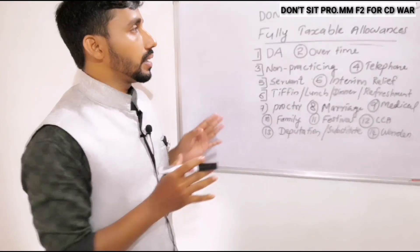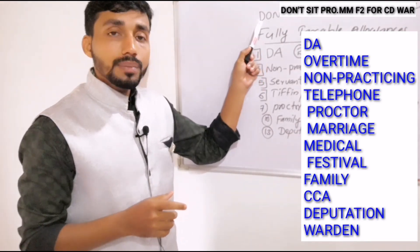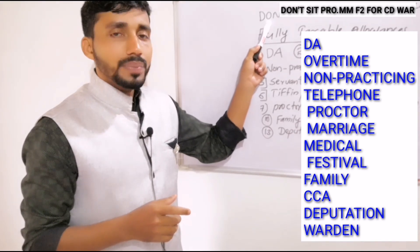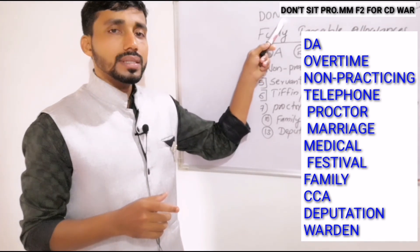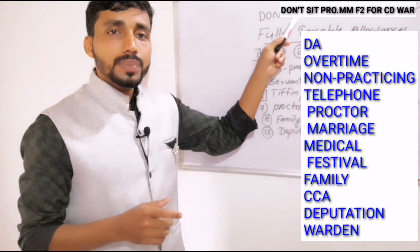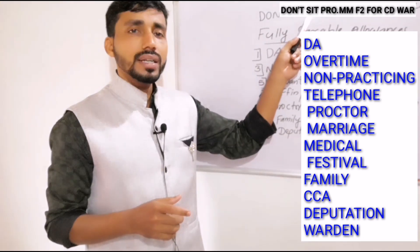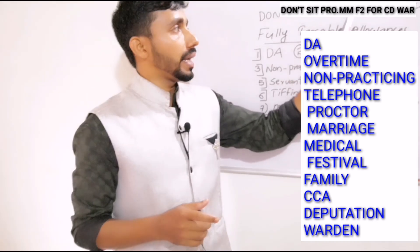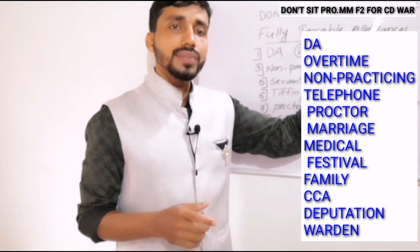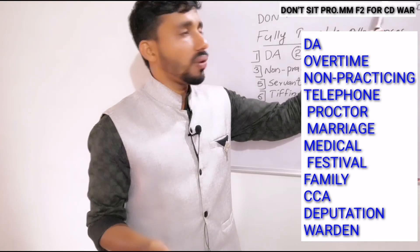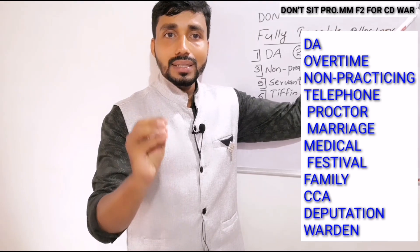To remember all fully taxable allowances, use the mnemonic: DON'T SIT PROFESSOR MMF2 FOR CD-VAR. D = Dearness Allowance, O = Overtime Allowance, N = Non-practicing Allowance, T = Telephone Allowance, S = Servant Allowance, I = Interim Relief Allowance, T = Tiffin Allowance, Pro = Proctor Allowance, M = Marriage Allowance, Medical Allowance, F2 = Festival and Family Allowance, C = CCA (City Compensatory Allowance), D = Deputation, VAR = remaining allowances. All of these are fully taxable.